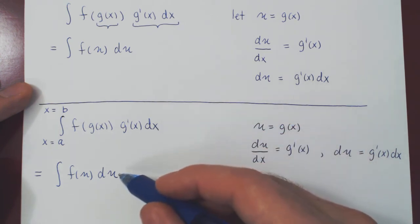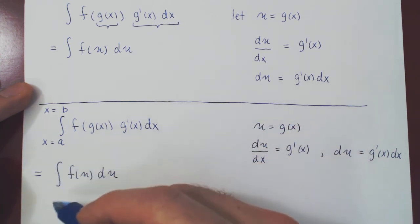But once you go from x to u, the new bounds of integration have to be in terms of u. So this should be u equals something and u equals something.